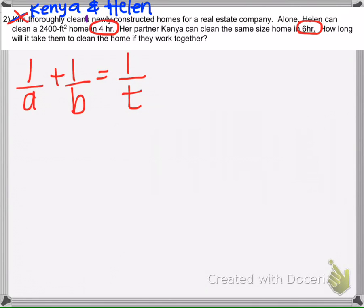How long will it take them to clean the home if they work together? So one job, the whole entire job to clean the house takes Helen four hours, and it takes Kenya six hours to do that one whole job every six hours.